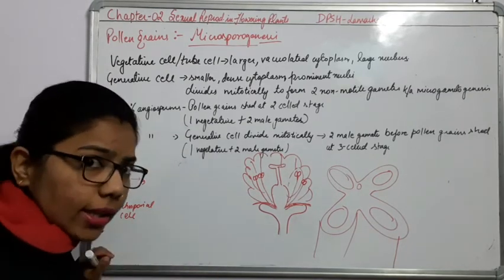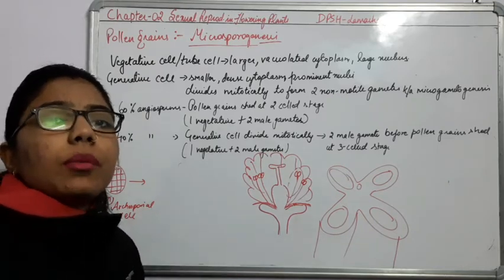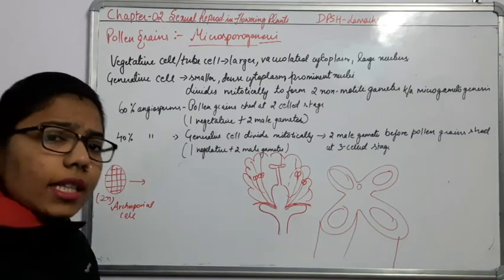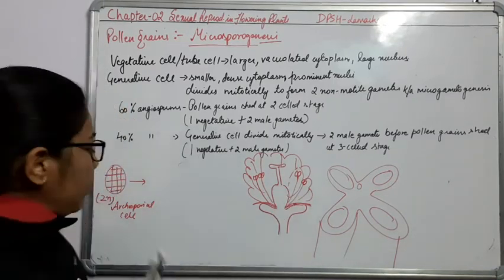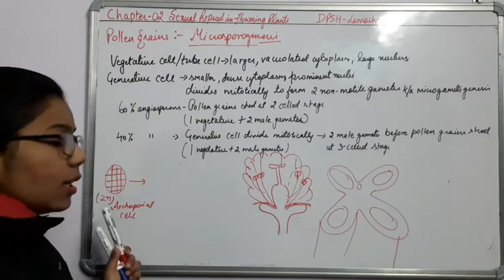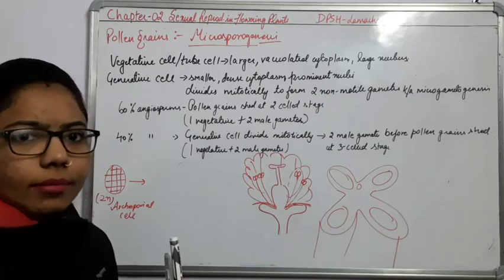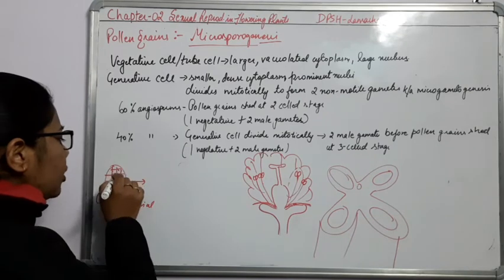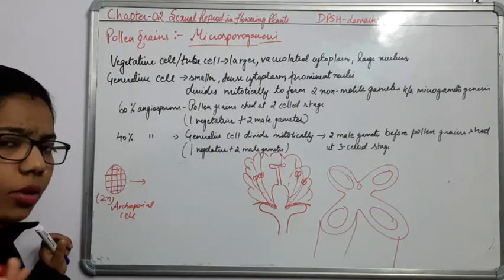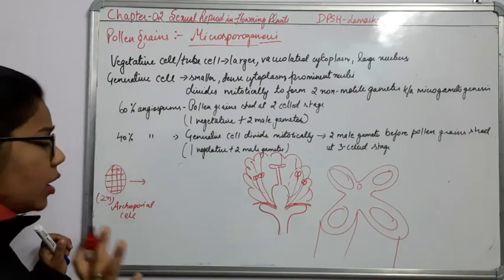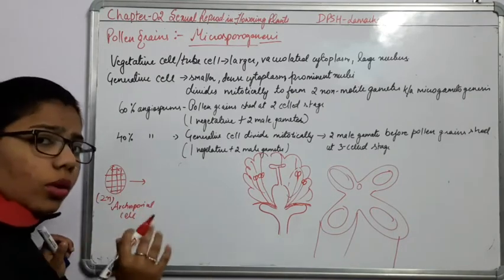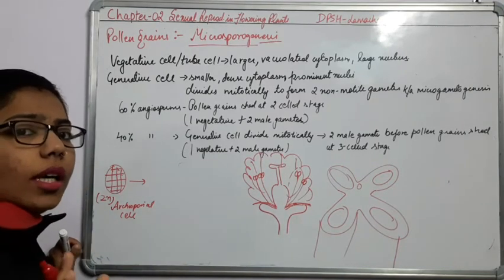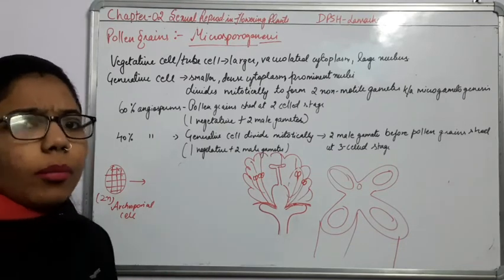For forming the diploid zygote, the gametes should be in haploid condition. These archesporeal cells or the cells present in the plant will be diploid. Archy means something old or a primitive cell. There is no differentiation of layers at this stage. When it will undergo meiosis, it will form haploid cells known as microspores. But directly it will not form the microspore — in between there are some different stages.